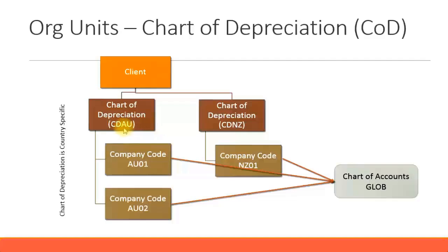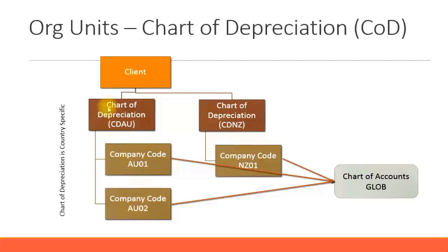Now let's look at the organizational structure for chart of depreciation. The chart of depreciation is created at the client level, which is the highest node in financial accounting. You can have one or more company codes in the same country using the same chart of depreciation. For example, company code AU01 and AU02 are both Australian companies using the chart of depreciation for Australia. Similarly, company code NZ01 is a New Zealand company code using the New Zealand chart of depreciation. So for each country, you have a chart of depreciation — that's why it's called country specific.